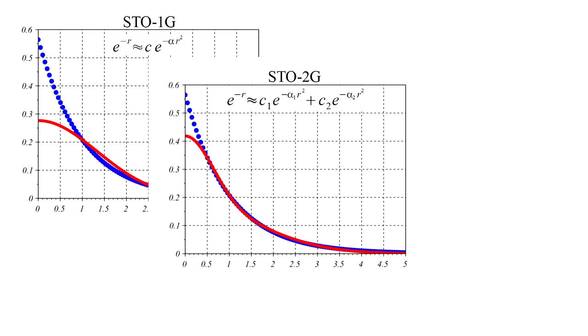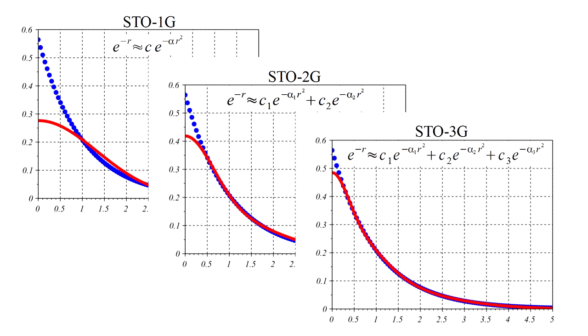However, a linear combination of two Gaussian-type orbitals gives a better approximation. And a combination of three Gaussians does better still. So given enough Gaussian-type orbitals, it should be possible to accurately represent the types of orbitals that actually arise in atoms and molecules.